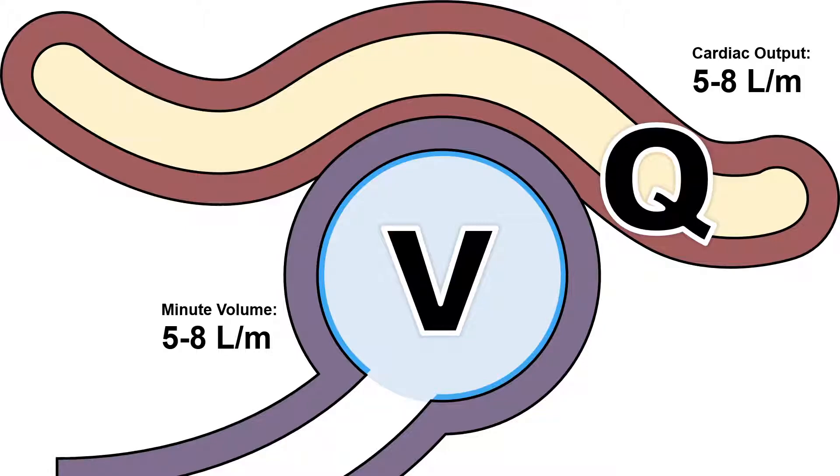So looking at these numbers, we can see here that in a normal, healthy person, the ratio of ventilation to perfusion is just about 1 to 1. So let's look at some ways we can mess this ratio up.